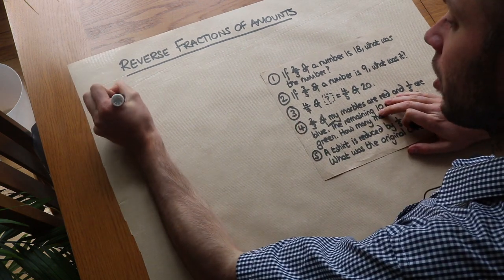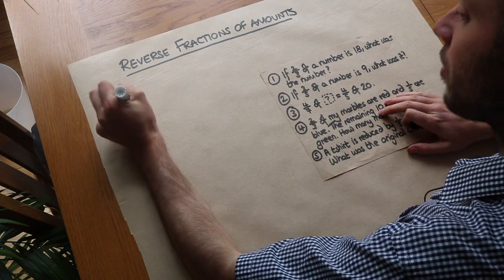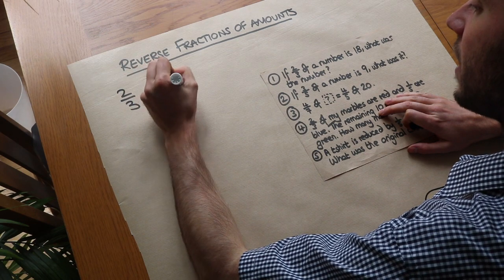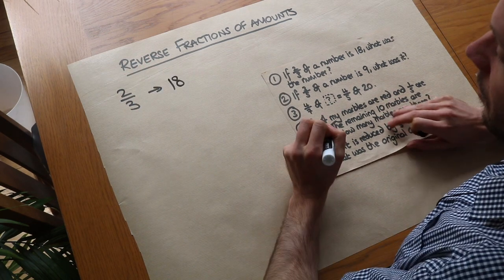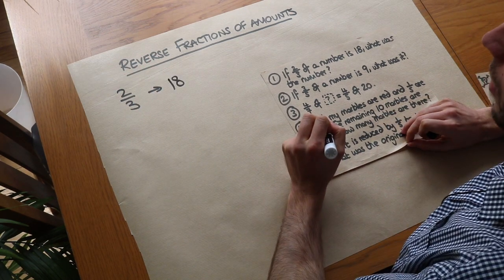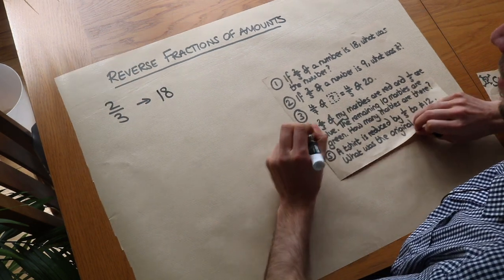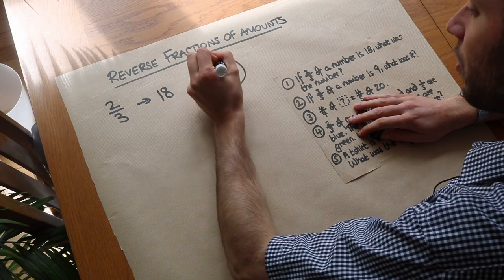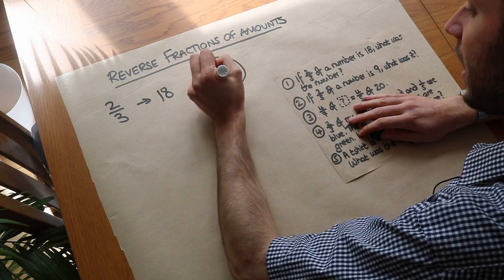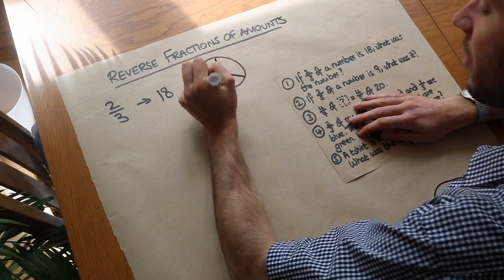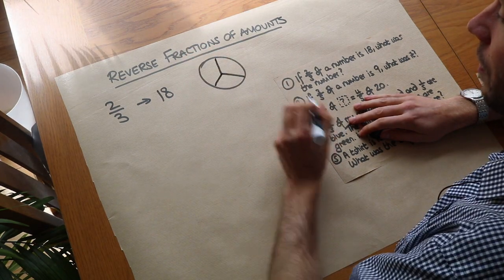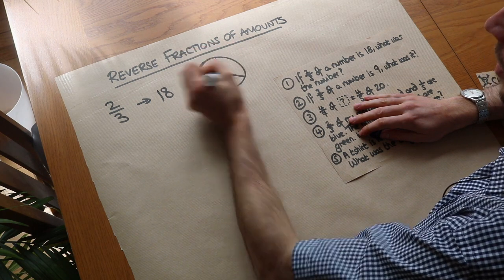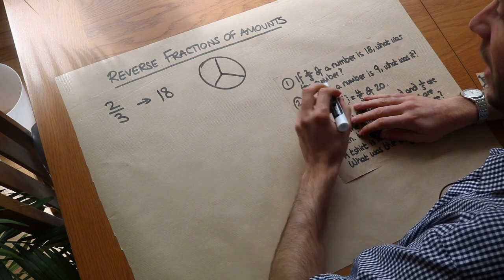We know that two-thirds of the number is 18 and we want to find what the original number is. If we try to do this pictorially, we've got something which was split into thirds, and two-thirds of it — i.e. these two slices here — was 18.